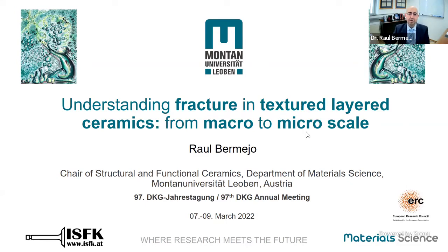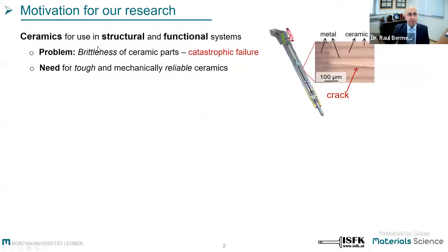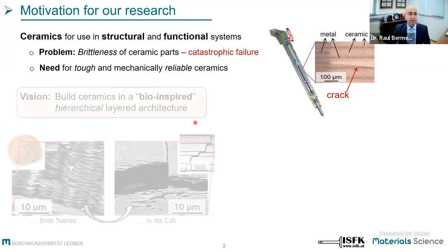We have some new insights on characterization at the micro scale, trying to see if we can explain some of the observations. As most of you know, whether working with structural or functional ceramics, we suffer the main problem of brittleness. In many cases we have catastrophic failure, and as soon as we get a crack in a functional system, we lose the functionality and the material will not work properly.